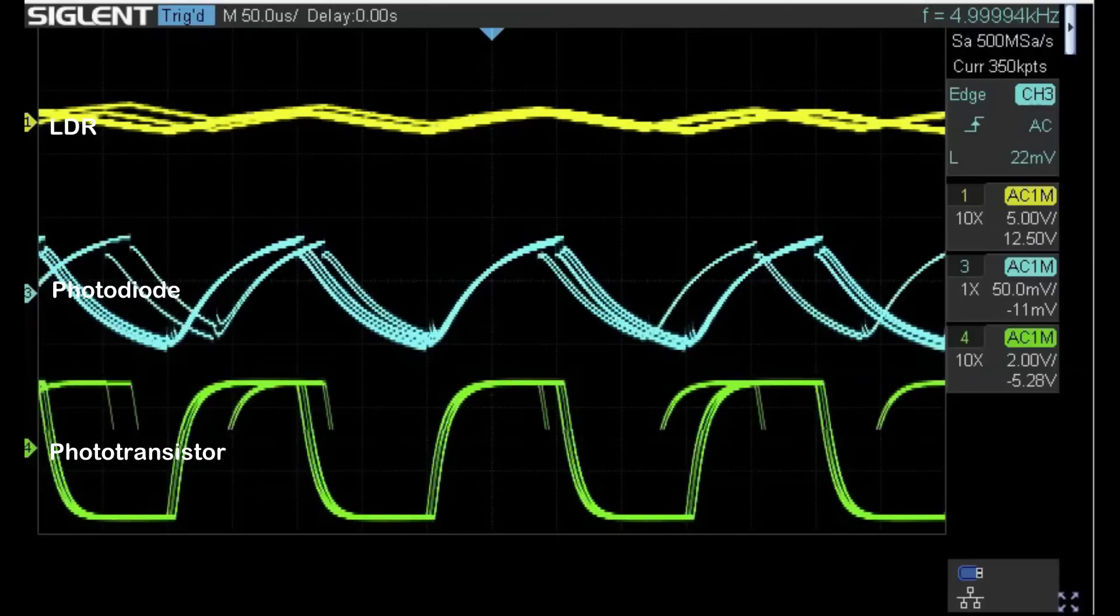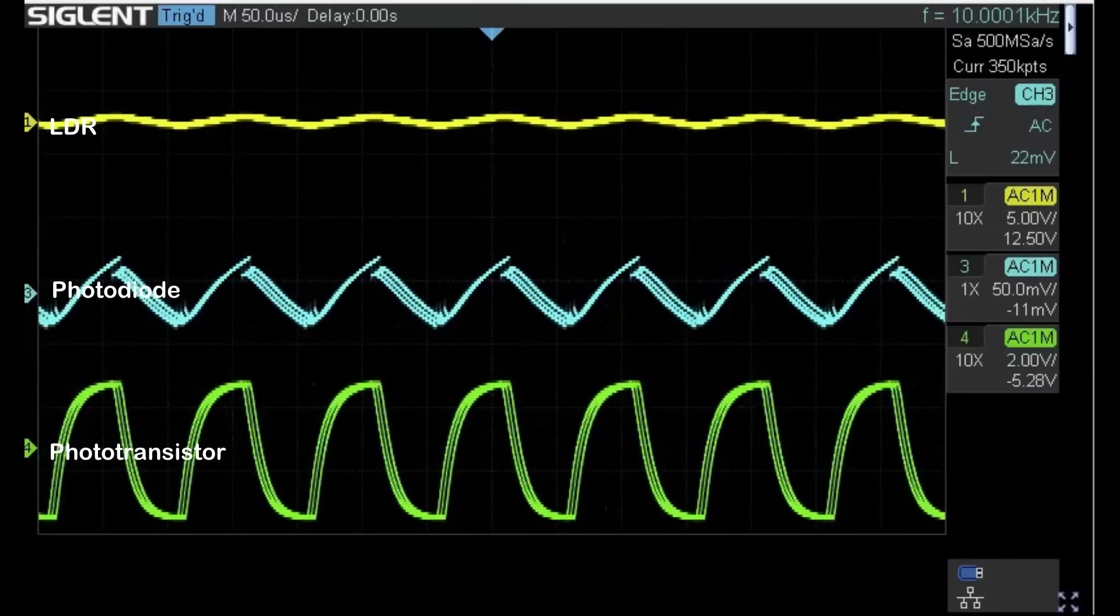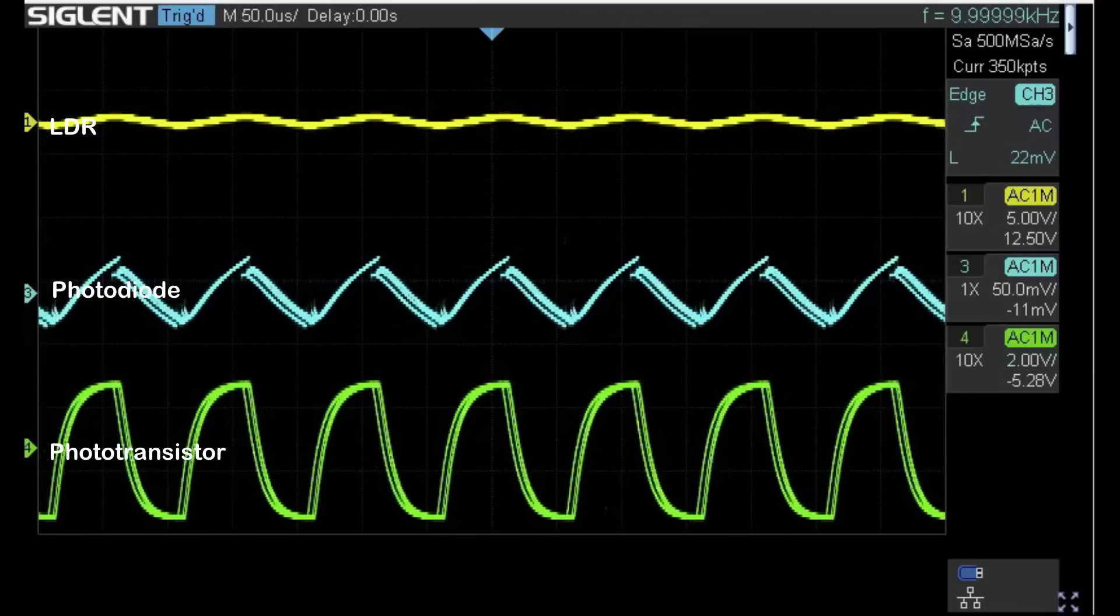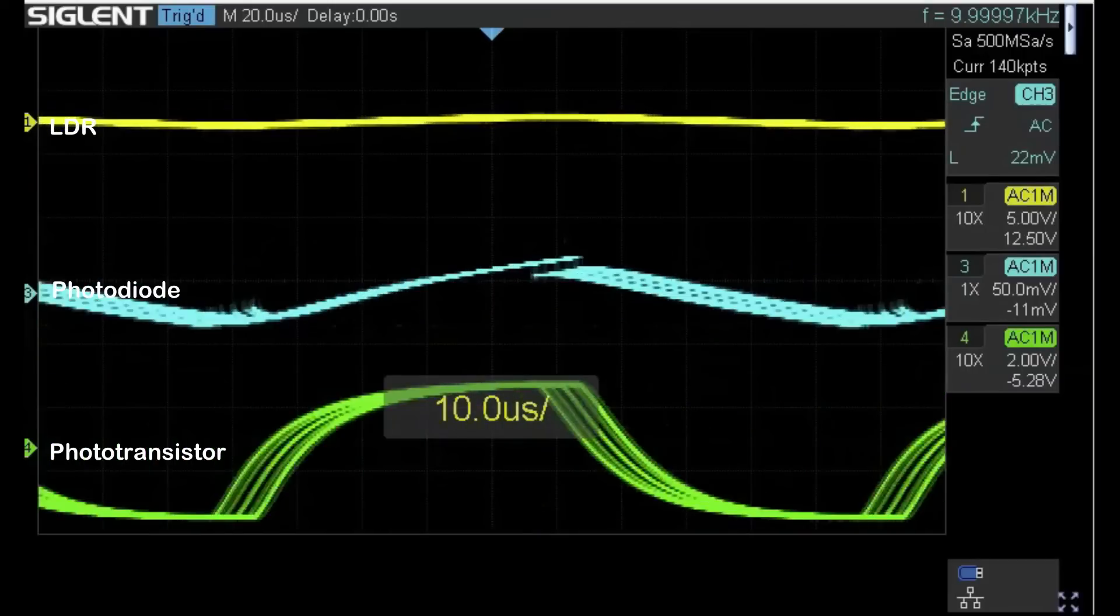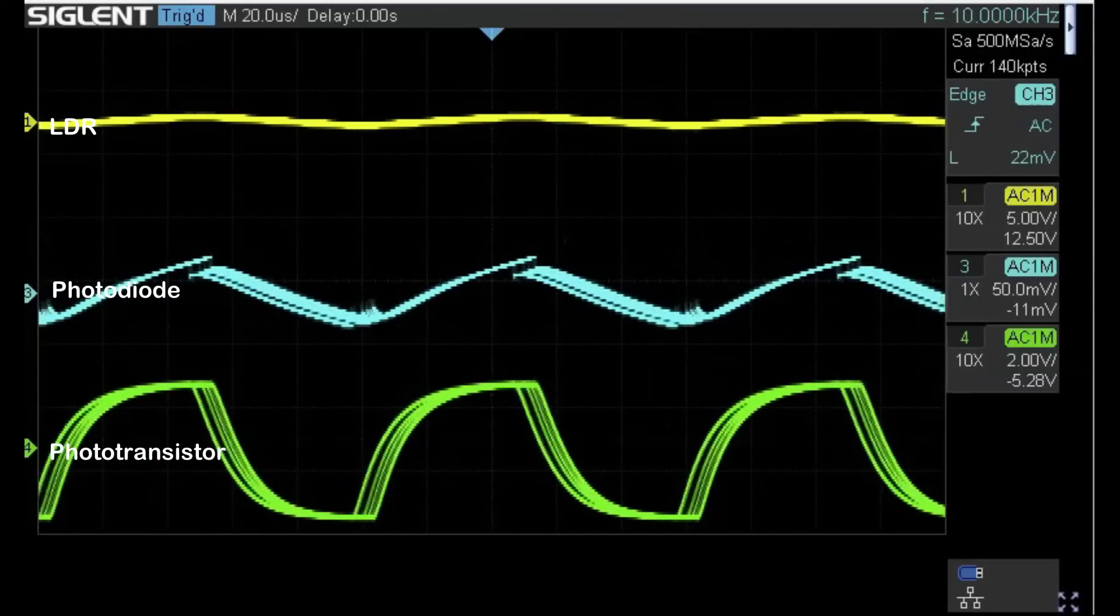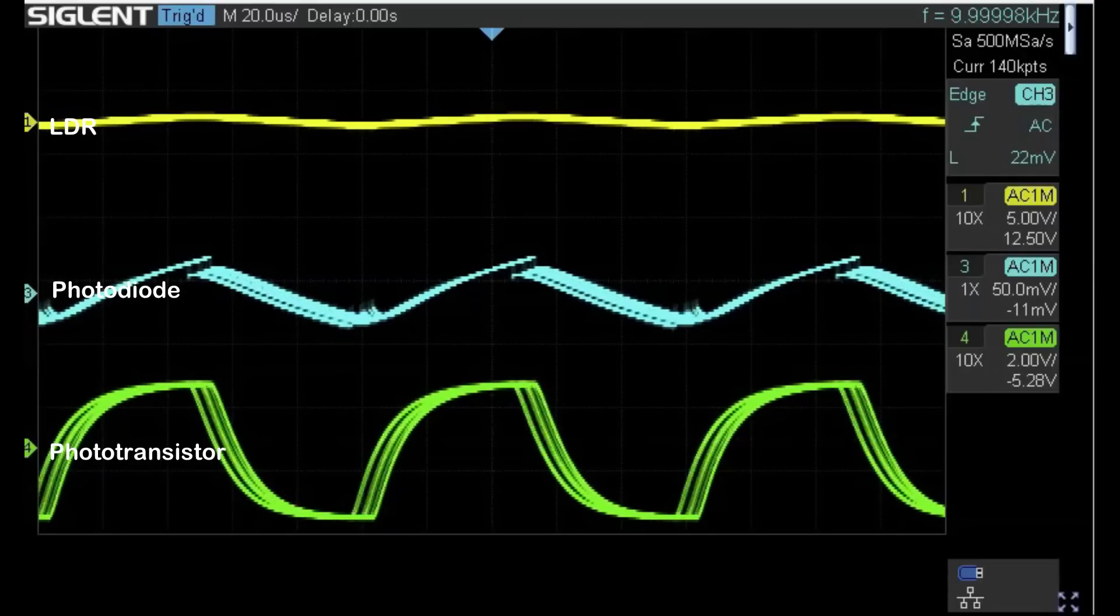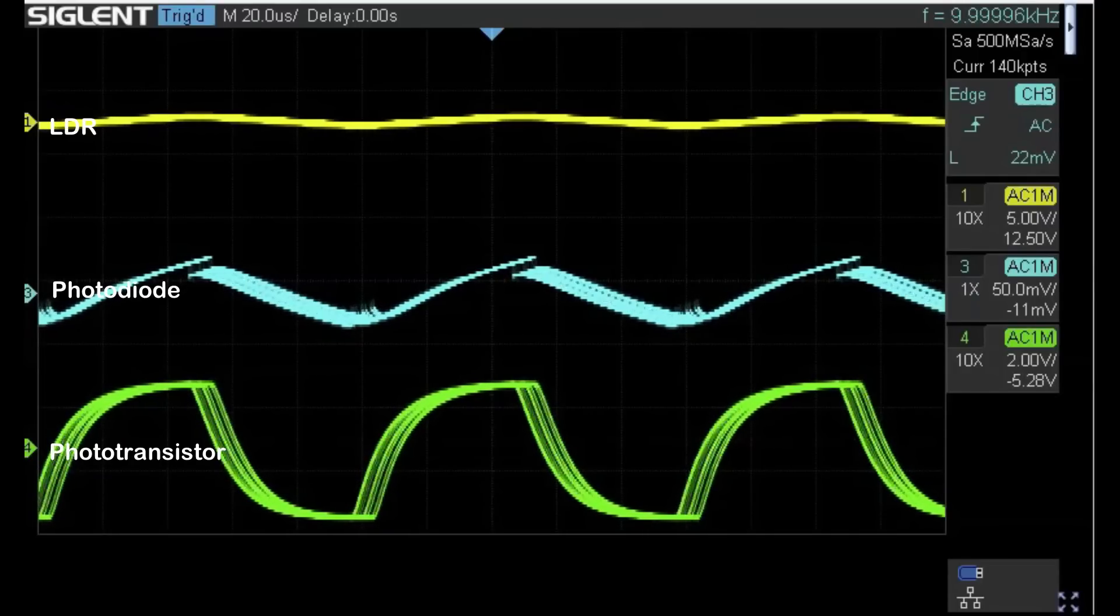Just for completeness, let's go up to 10 kilohertz. The frequency is displayed on the top right of the screen for reference. You can see the photodiode struggling now, but the transistor is still not too bad at all.